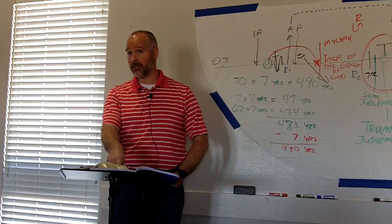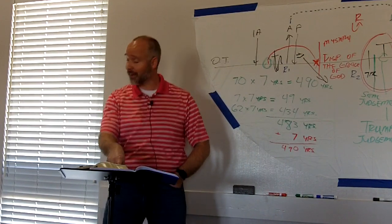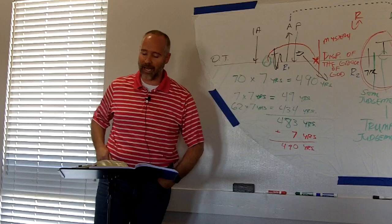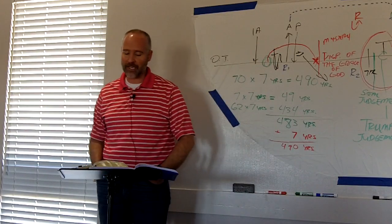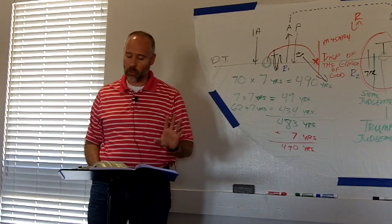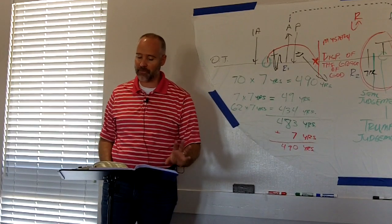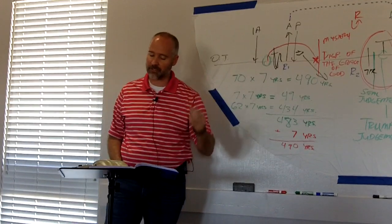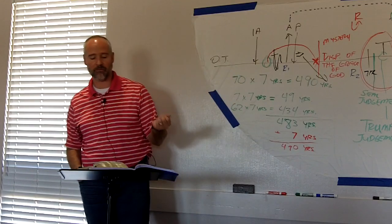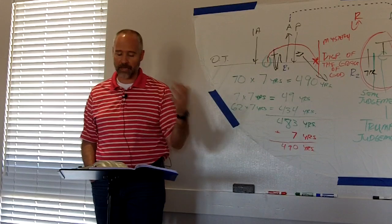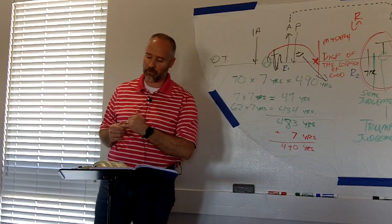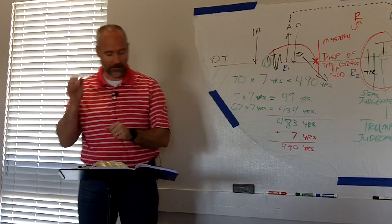Again, we're talking about the second half of the tribulation there. Verse 6. And he opened his mouth in blasphemy against God, to blaspheme his name and his tabernacle and them that dwell in heaven. And it was given unto him to make war with the saints and to overcome them. And power was given him over all kindreds and tongues and nations. And all that dwell upon the earth shall worship him, whose names are not written in the book of life of the Lamb slain from the foundation of the world. If any man have an ear, let him hear. He that leadeth into captivity shall go into captivity. He that killeth with the sword must be killed with the sword. Here's the patience and the faith of the saint.